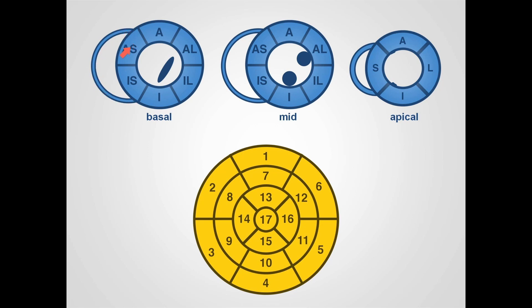The anteroseptal and inferoseptal segments are bounded by the anterior and inferior insertion points of the right ventricle. This is also true at the mid-ventricular level, where again we have six segments named as before. We identify the mid-level by the presence of the papillary muscles. At the apical level, we have four segments: anterior, lateral, inferior and septal. The septal segment is defined by the attachment points of the right ventricle.